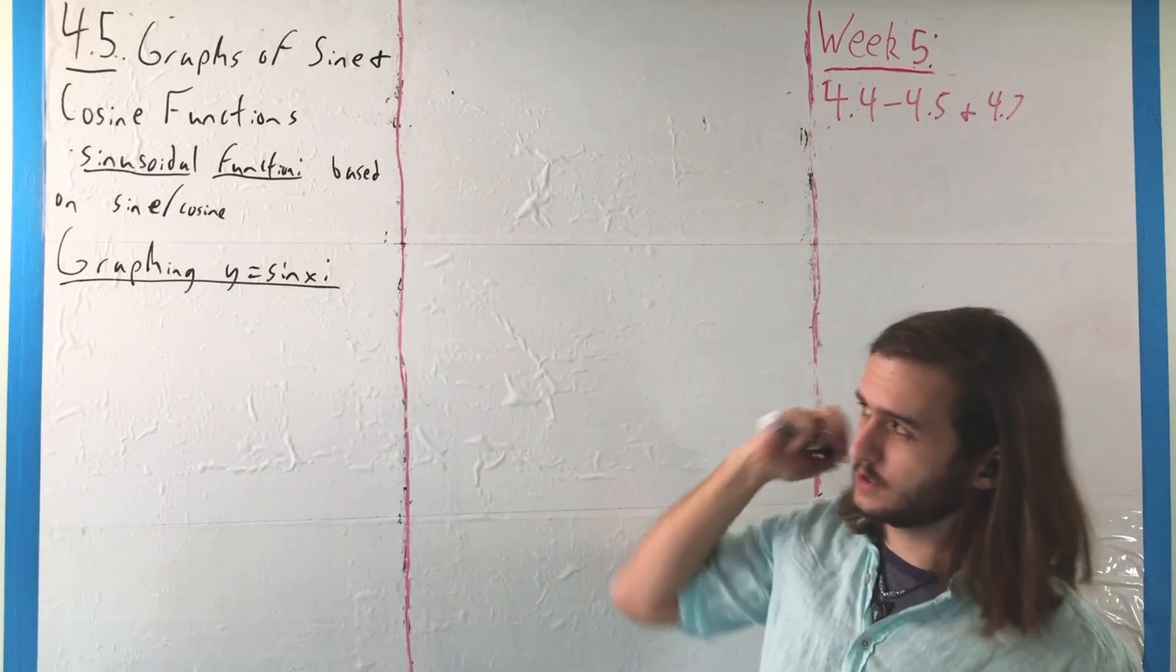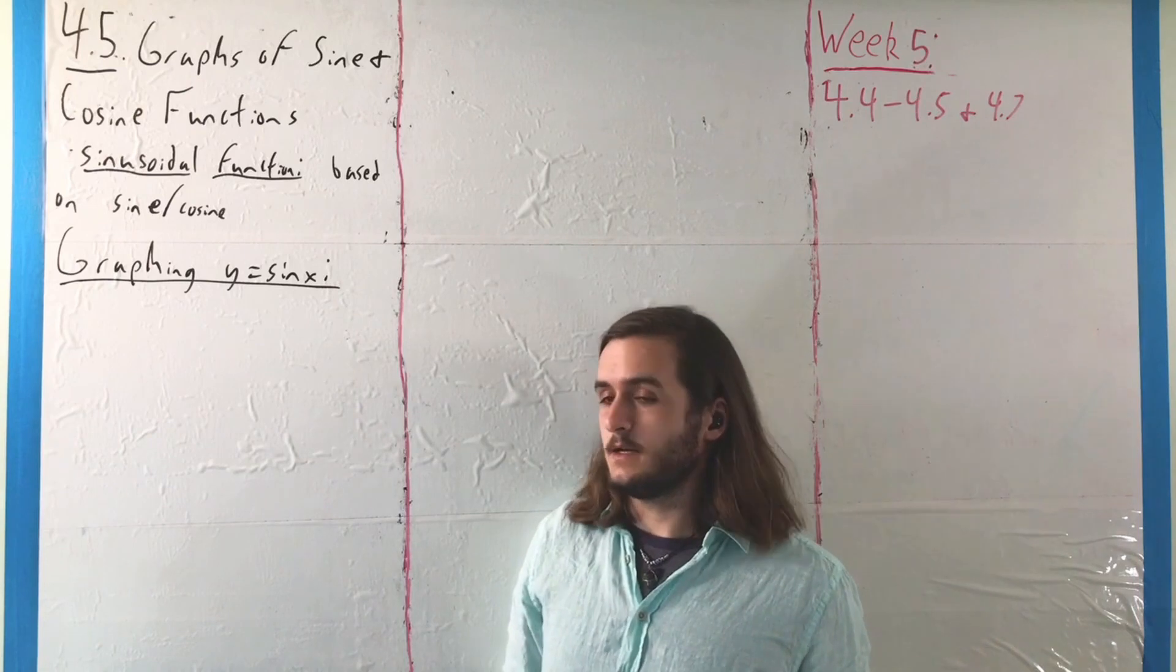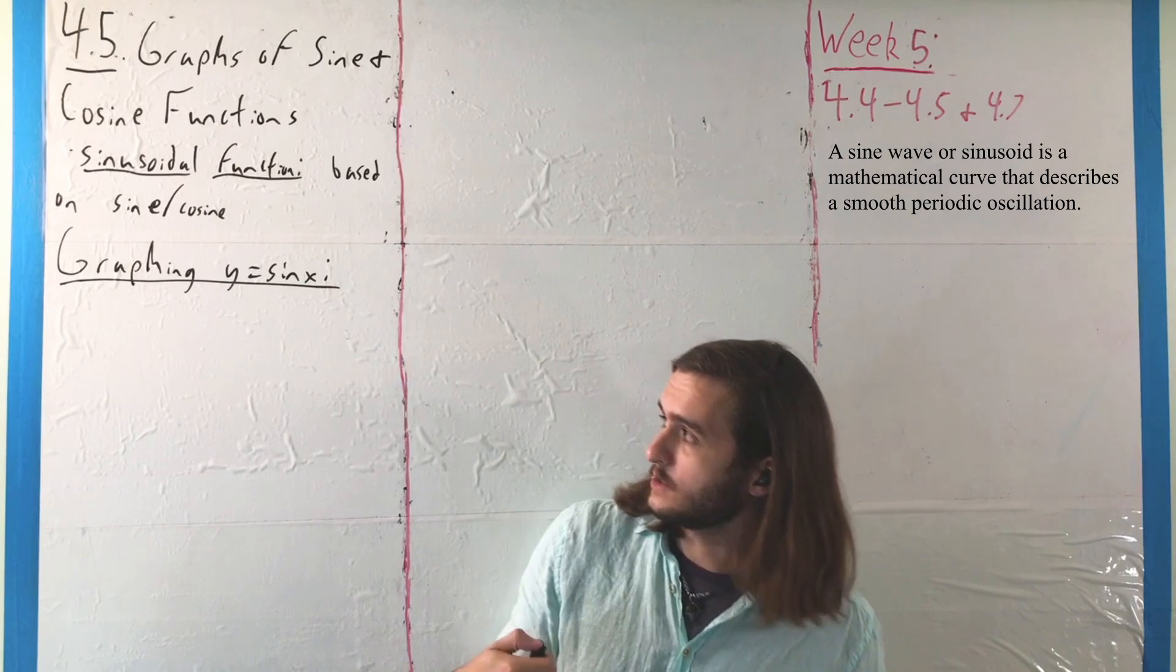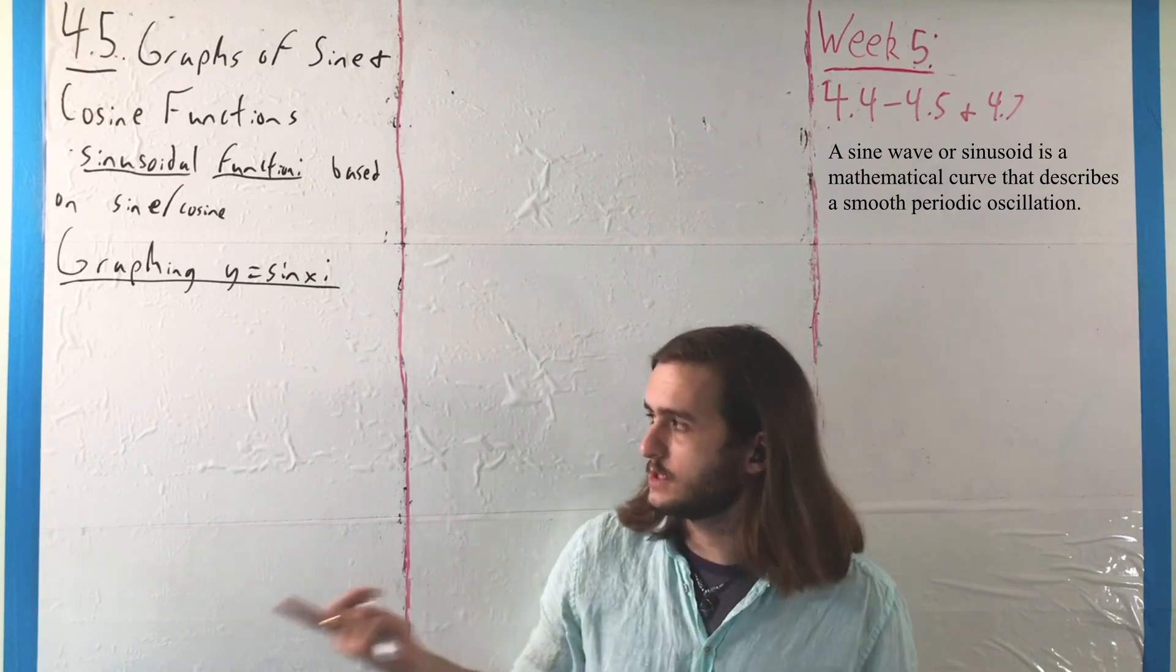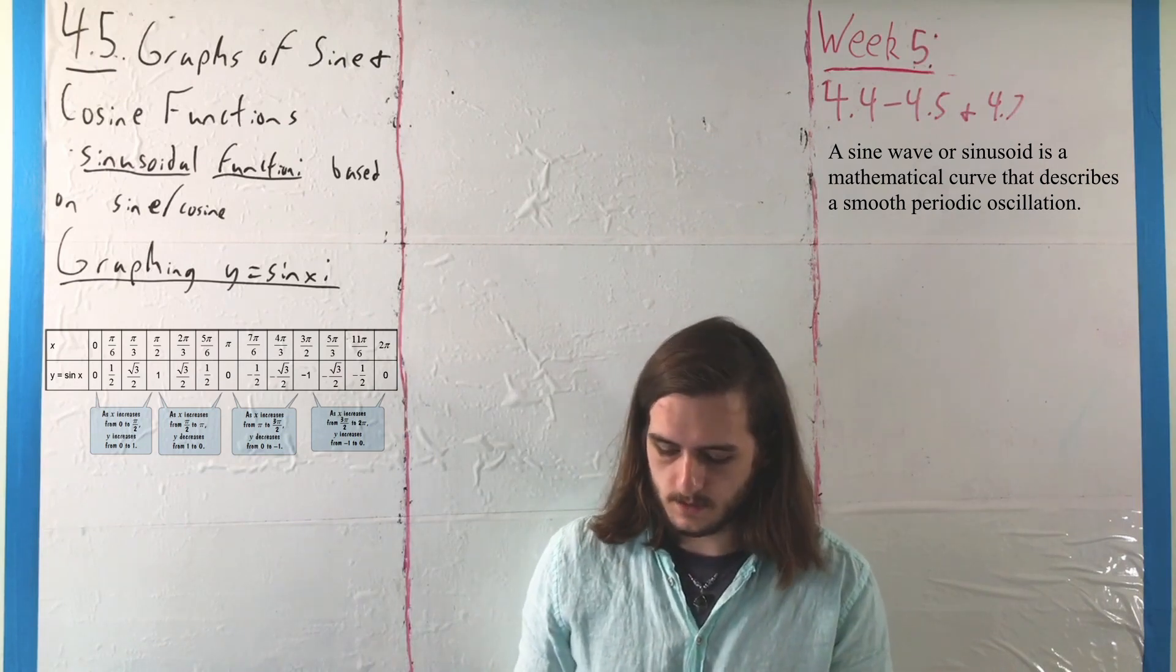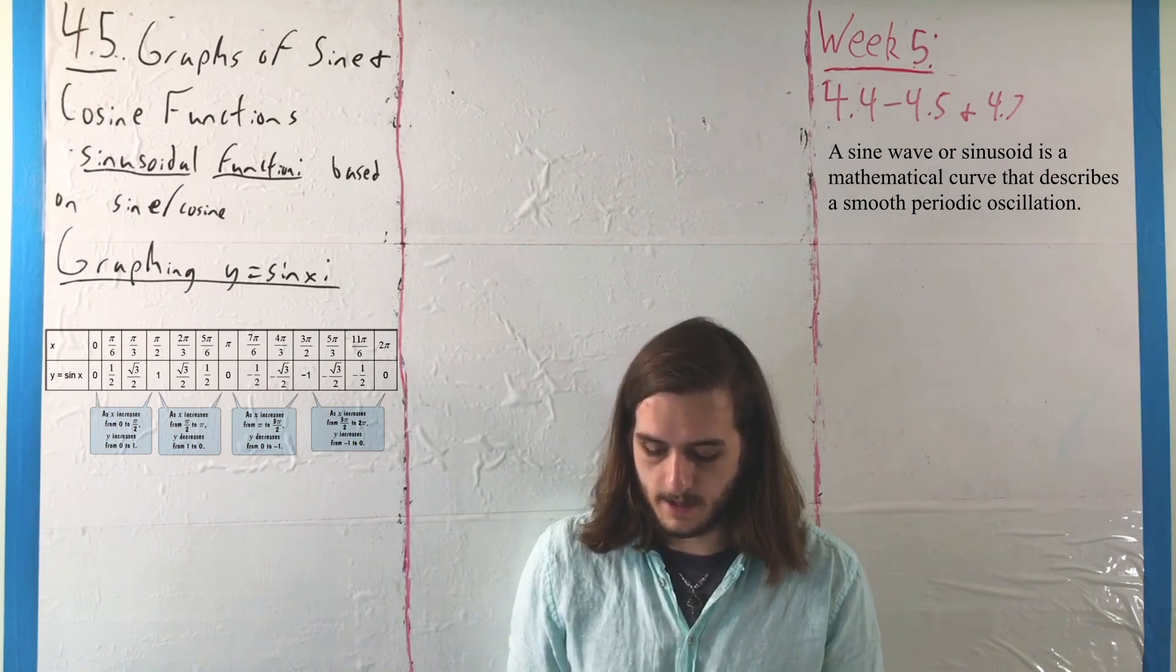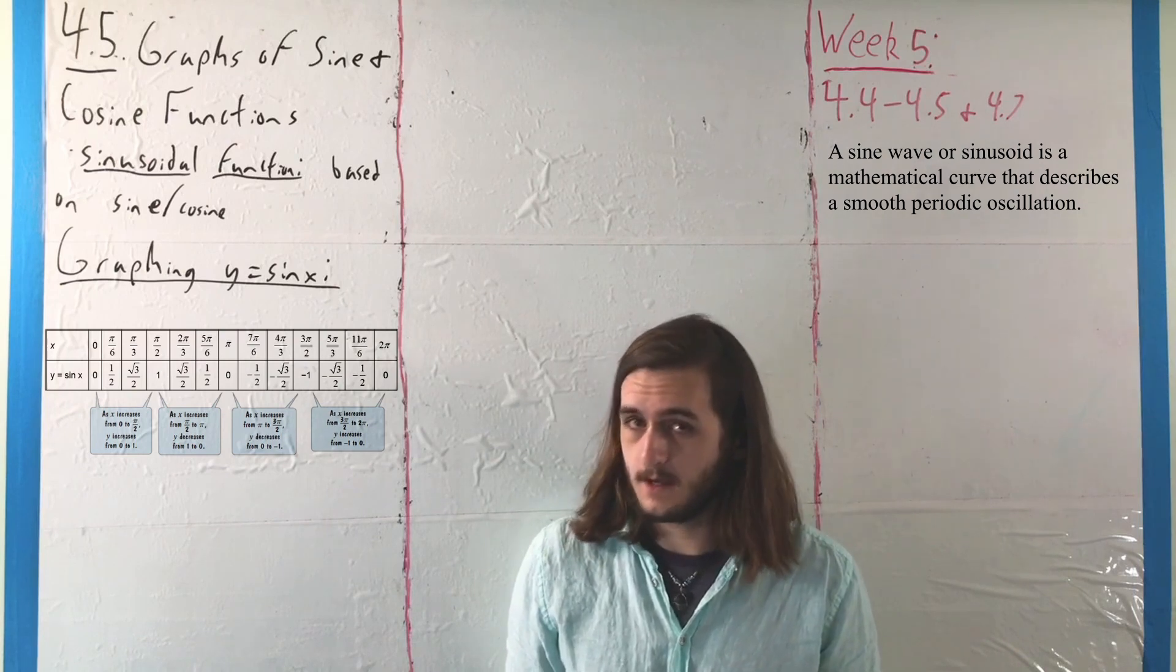We want to talk about this in terms of functions, where we call functions based on sine and cosine sinusoidal functions. And in particular, if we want to graph sine of x, it's pretty straightforward. What we do is we just take a table of our main values for sine of x, things like 0, π over 6, π over 3, π over 2, 2π over 3, 5π over 6, and π.